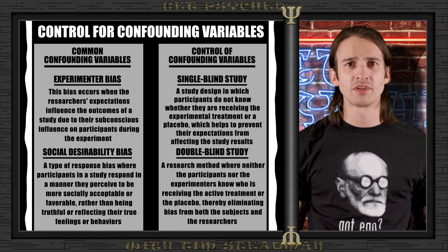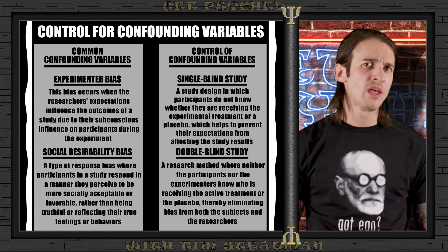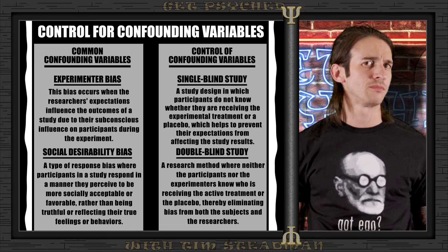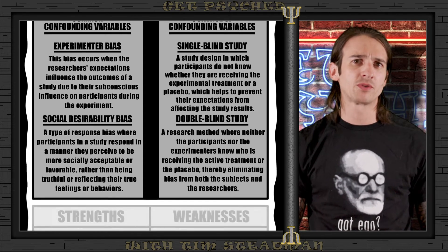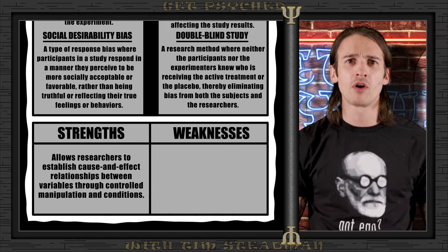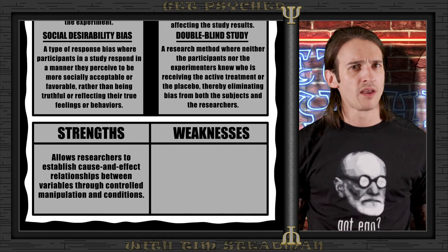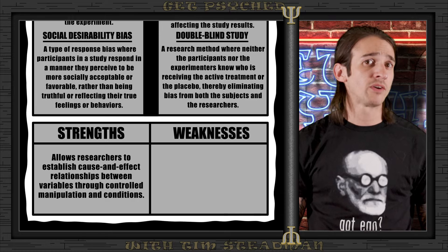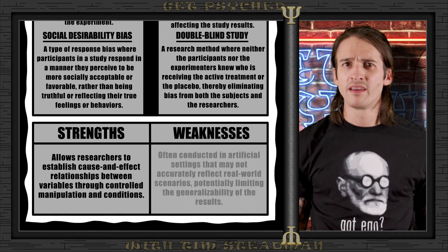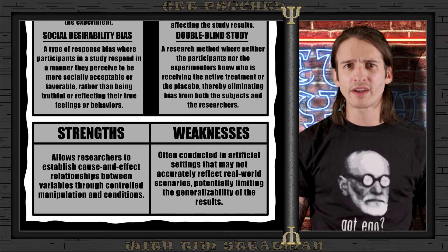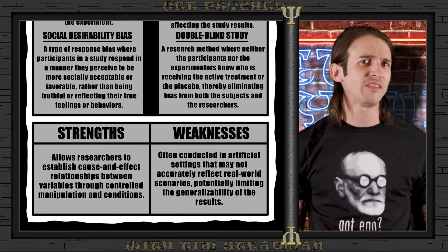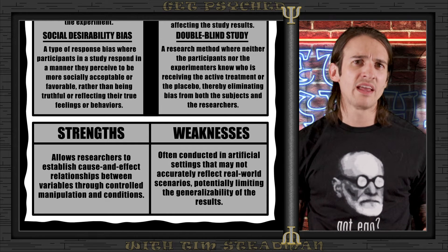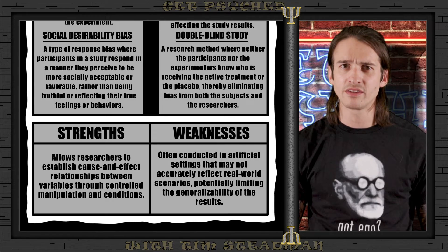With a double-blind design, participants would not know whether they are taking the actual medication or a placebo, and we as experimenters would not know who is part of each group until the experiment ends. One of the biggest benefits of experimental research is its ability to establish causality — a cause-and-effect relationship — by manipulating one variable and controlling the rest. However, experimental methods can be very resource-intensive, require strict control of conditions which isn't always possible or ethical, and the highly controlled environment can limit the generalizability of findings to more natural settings.